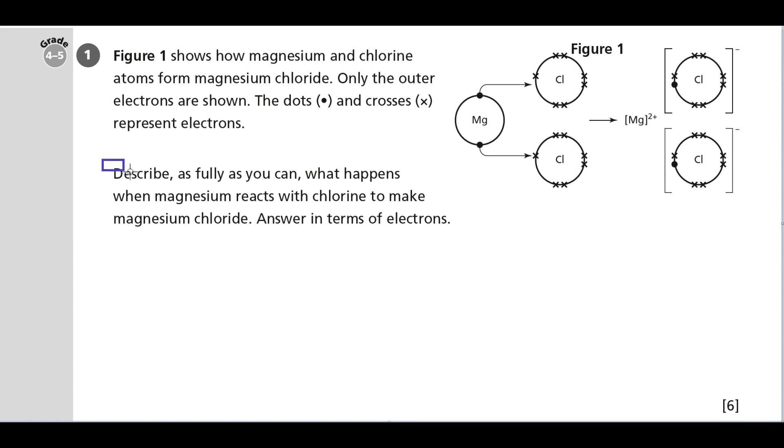So the command word here is describe. That means we need to say simply what's going on. We don't need to explain why it's going on. So what exactly are we describing? We're describing what happens when magnesium reacts with chlorine to make magnesium chloride. And crucially we need to answer in terms of electrons.